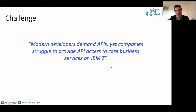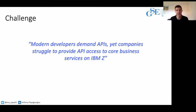The challenge we faced back in 2015 and 2016 was that modern developers were demanding API access to core enterprise systems, yet companies were struggling to provide that access to their business services on IBM Z. The phrase I used a lot was: developers are your new customers and APIs are your new products. Developers want to move very quickly and do things intuitively.